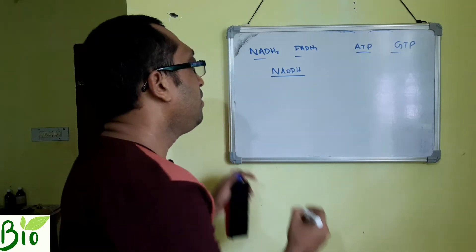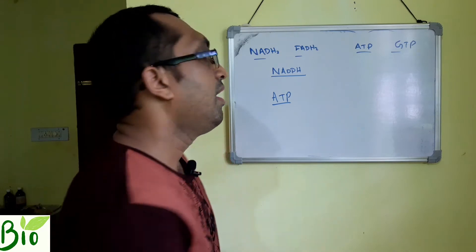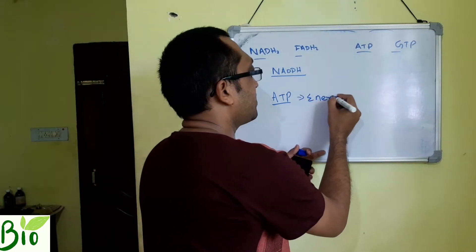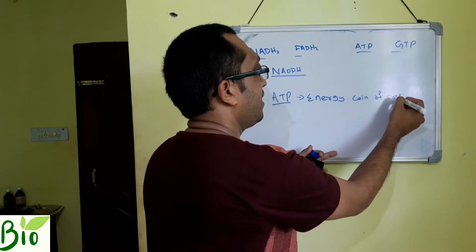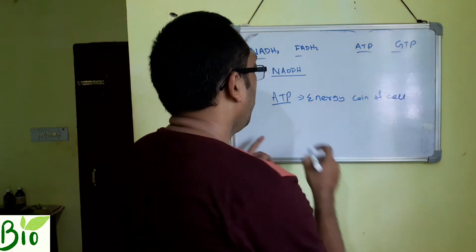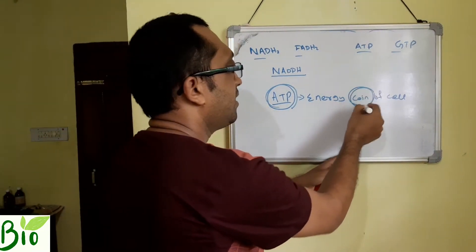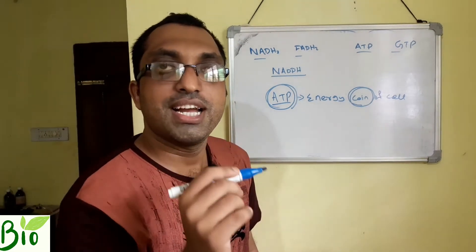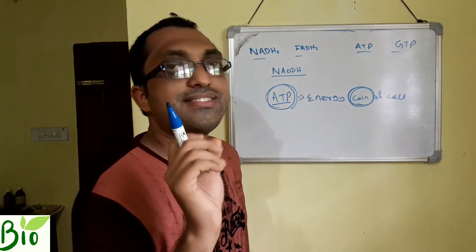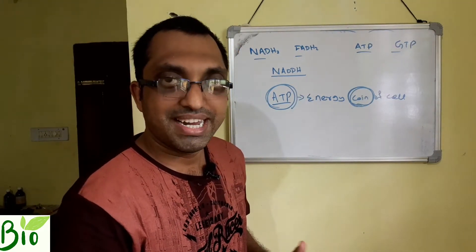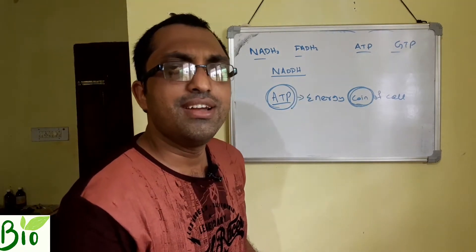We all know what is ATP. ATP is the energy currency of the cell — the energy coin of the cell. When you need energy, you spend some ATP, therefore it is called the energy coin of the cell. In the market, coins are always going on, or a check is there — we always exchange coins or sometimes a check or DD.